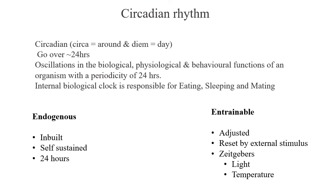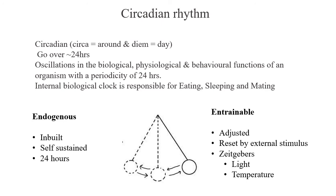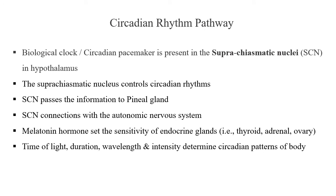Circadian means 'around a day' — oscillations in the biological, physiological, and behavioral functions of an organism with a periodicity of approximately 24 hours. The internal biological clock is responsible for eating, sleeping, mating, and other endogenous characters. These are inbuilt, self-sustained, approximately 24-hour oscillations. The interval can be adjusted and reset by external factors like light and temperature.